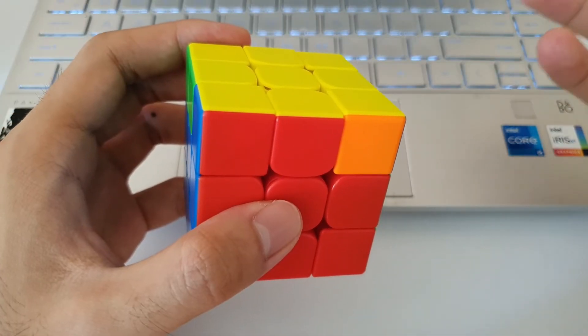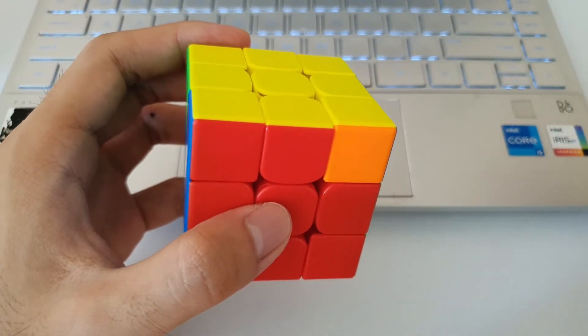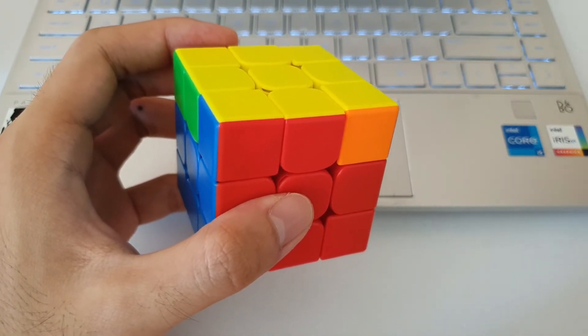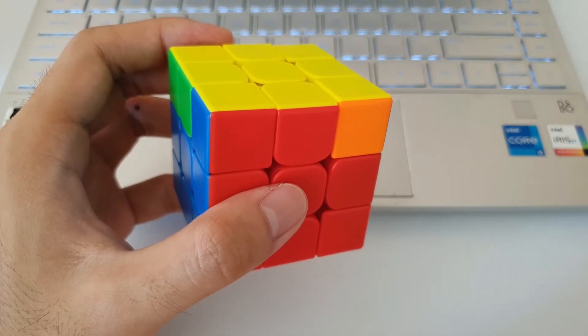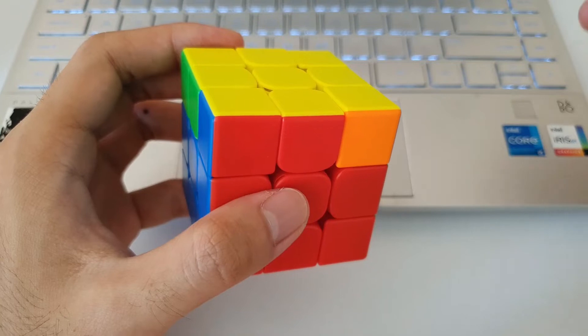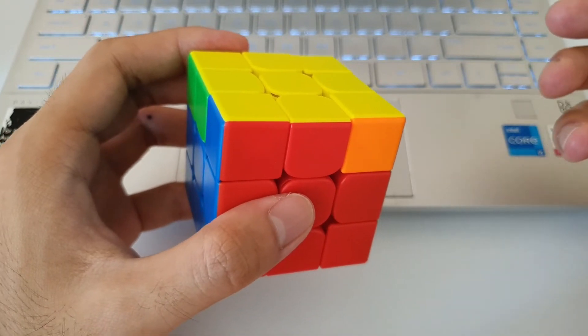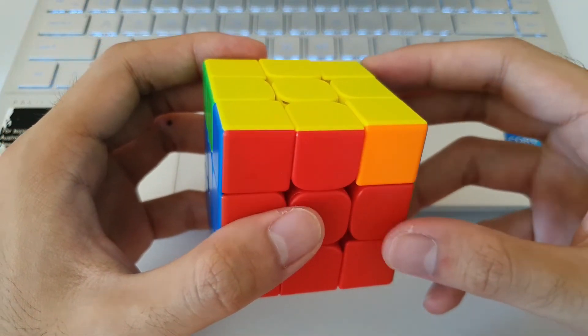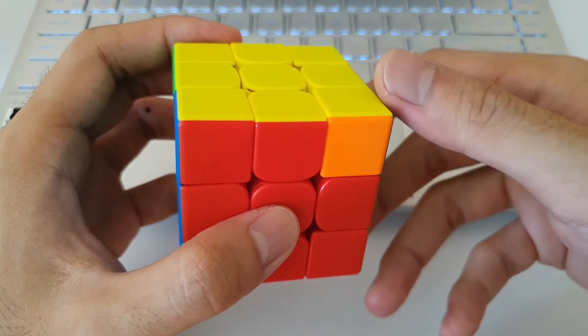So even though the Nb perm is shorter, the finger tricks are actually not as good as those on the Na perm. So it actually takes about the same amount of time for me to do both algorithms, just because there is this massive re-grip in the middle of the Nb perm. So with this algorithm, I like to always start with a re-grip anyway, because it makes the next few moves flow a lot nicer.